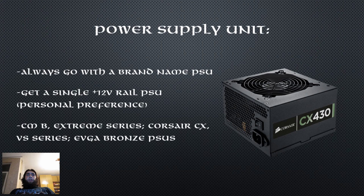Next up is the power supply — do not go with cheap power supplies. To ensure a good running stable system, always spend the extra cash and get a quality power supply. Cheap power supplies could cost you greatly because they have a relatively high failure rate. The components in them are of the lowest class and they sometimes even skip soldering some components on the board to save money. For a budget build I would recommend the Corsair CX series, the Cooler Master B and Extreme series, or the lower wattage EVGA models.